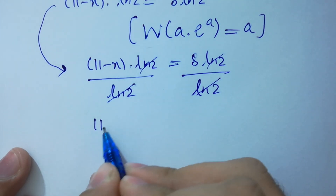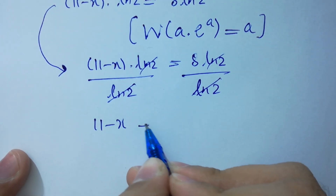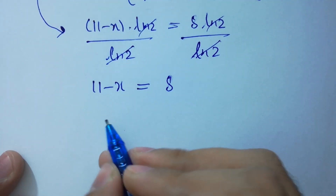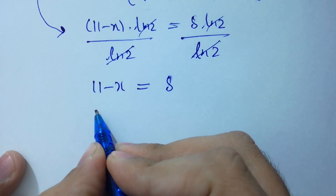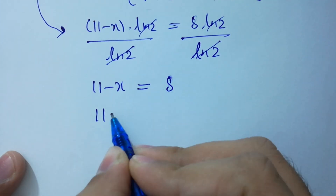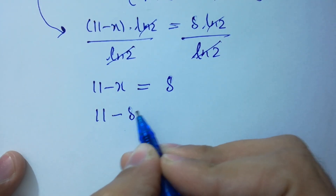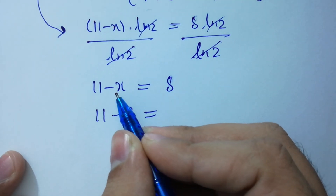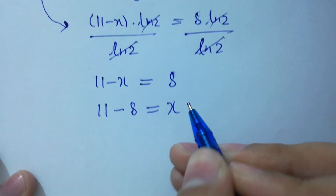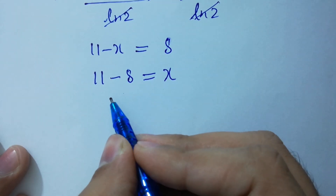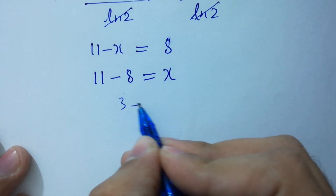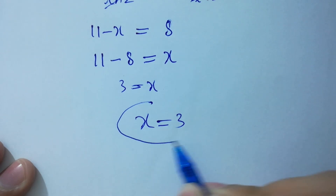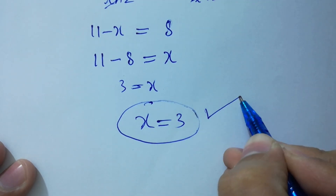From 11 minus x equal to 8, moving terms: 11 minus 8 equals x, so x equals 3 is our final answer.